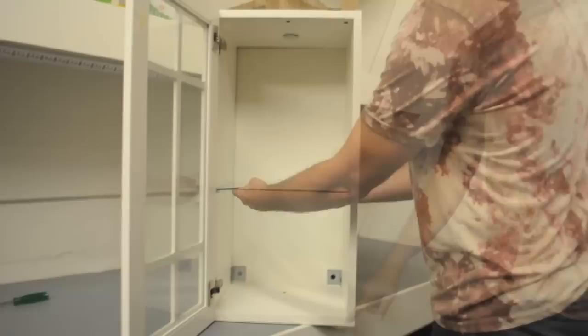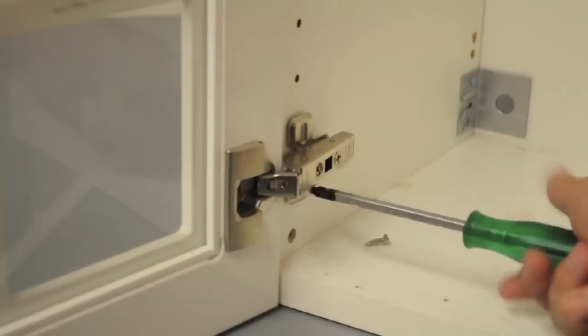Start by removing any shelving from the cabinet. You'll then remove the door using a household screwdriver.